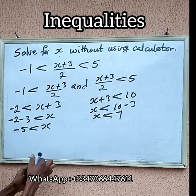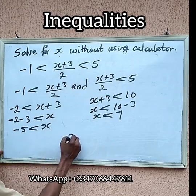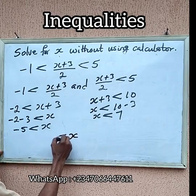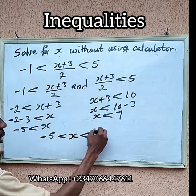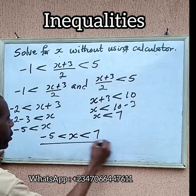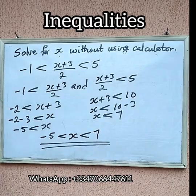So there are two inequalities satisfied here: x is greater than -5 but less than 7. So we can combine that together, put x in the middle, then x is greater than -5 but less than 7. So this is your answer to this question. I hope this solution helps.